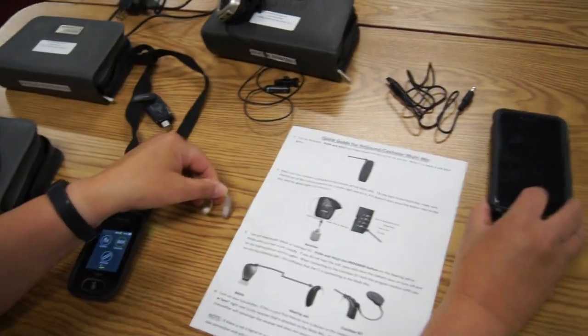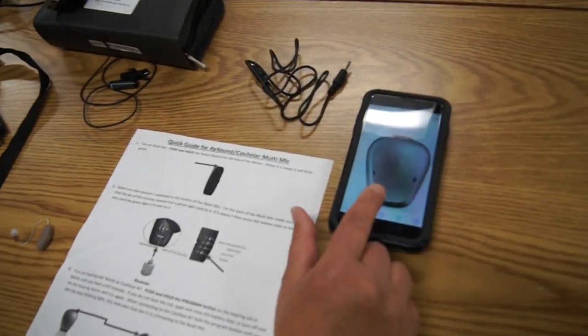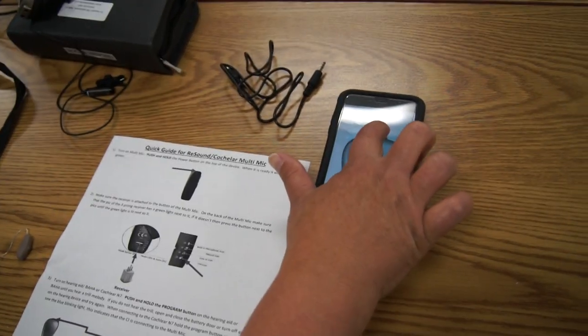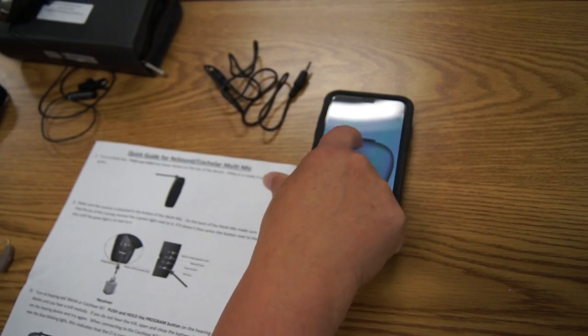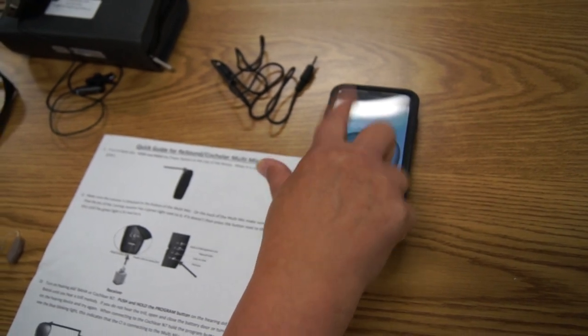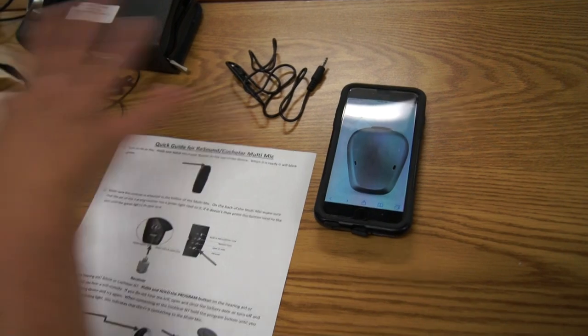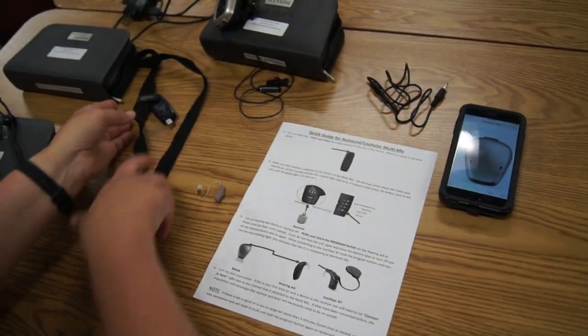If you have a student that has a cochlear Baja, the button is at the top. You're going to do that same thing—press that button down until you hear the trill. That sends it into that program and then you should be able to hear.